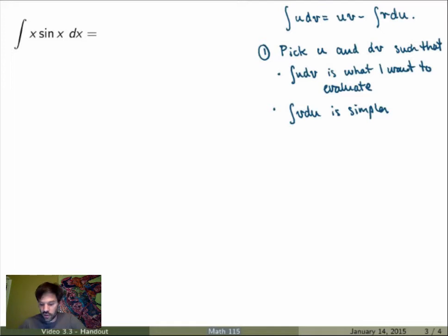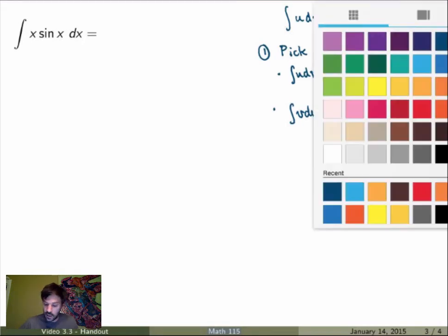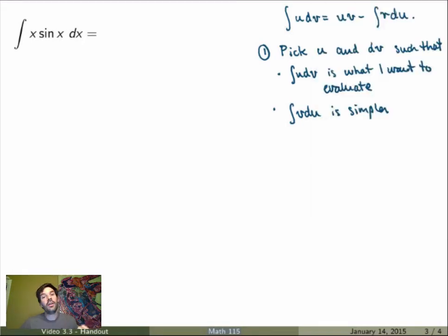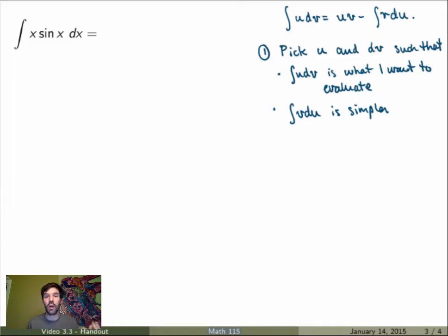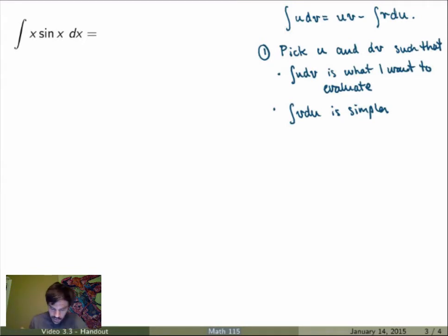There's a challenge in using integration by parts because it's not given to you what u and v are — you have to find which choice will work. Generally there are many choices, so my advice, at least at first, is to write down all the possible choices and figure out which one works. As you do many problems you'll develop intuition and be faster. But at first it's good to write down everything. Then we'll come up with a rule of thumb for what choice should work in general.